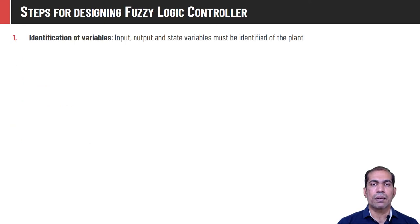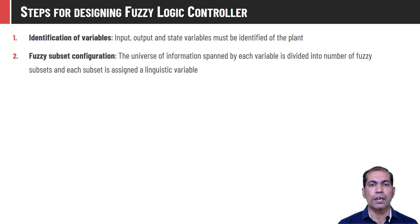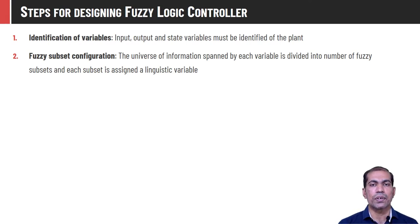Now we will see the step-by-step procedure for designing any fuzzy logic controller, and in the latter half we will discuss it with an example. The first step is to identify variables for the given system — we need to find out what are the input parameters and what are the output parameters. In step two, we find out proper fuzzy subsets: the universe of information spanned by each variable is divided into small sets, each given a linguistic variable name.